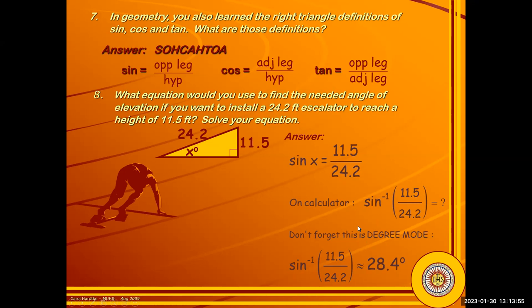Pay attention to whether your calculator is in degrees or radians mode. If you're in radians mode, you're going to get a strange number. You can generally eyeball these problems and get a feel for what theta should be. If you calculated this in radians mode, you'd get something like 0.0003 — clearly that's not a less-than-one-degree angle, so it doesn't make sense. We also know internal angles sum to 180, so if one angle is already 90, the other two must add to 90.